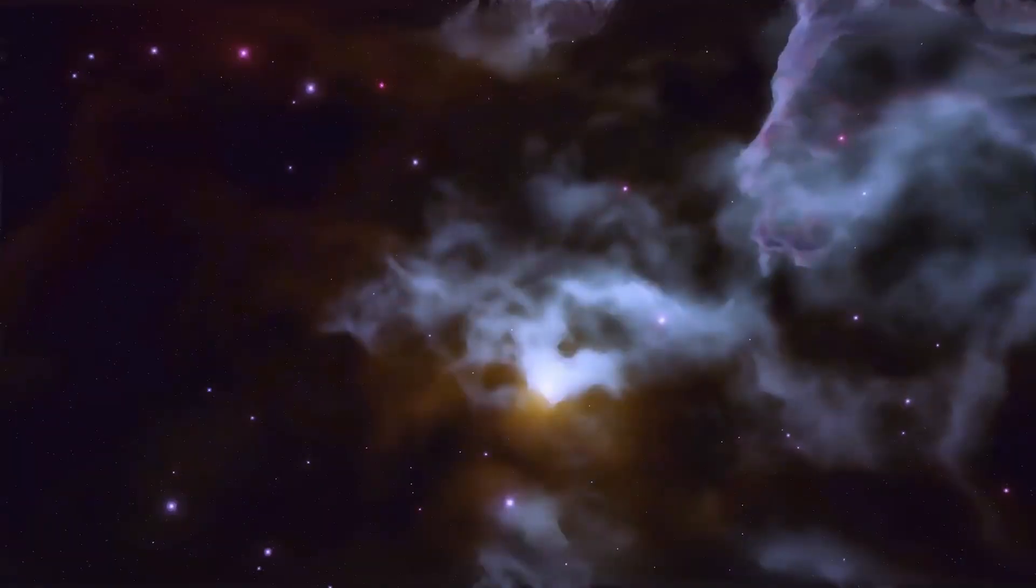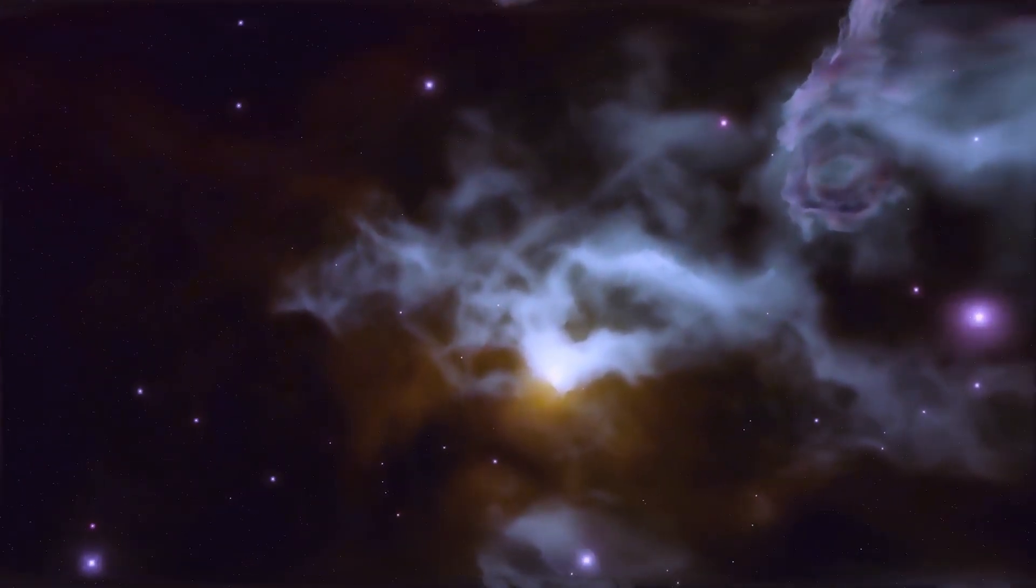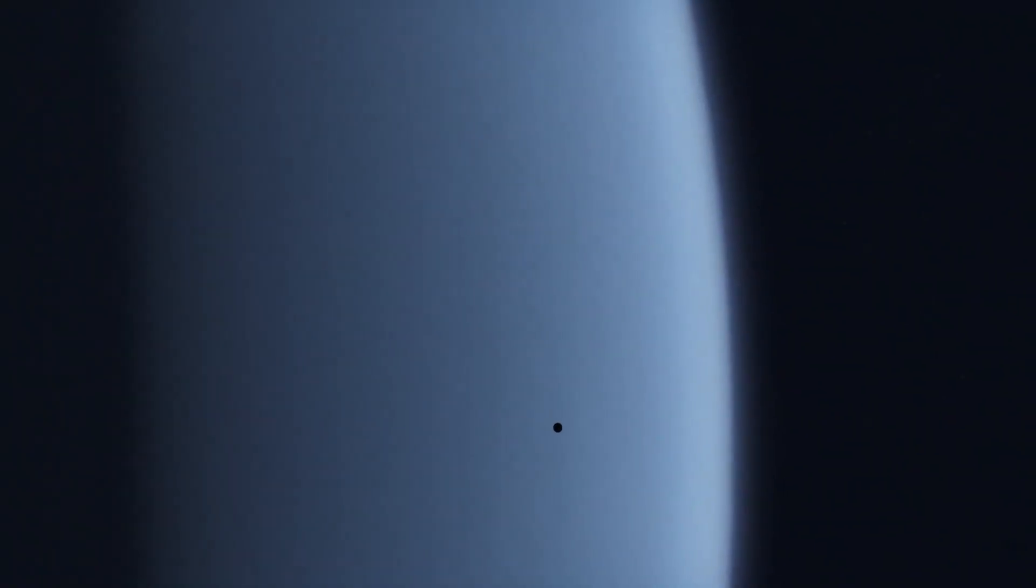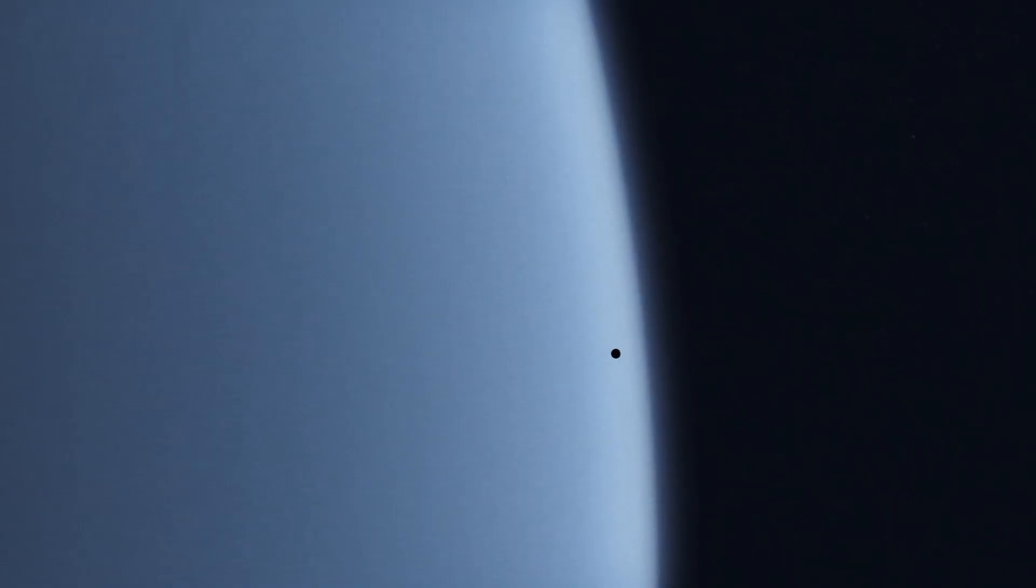By the time the object reached the edge of the asteroid belt, it had travelled nearly a million kilometers in a matter of days. It never slowed down once it reached that limit. Instead, it simply changed angle and disappeared into deeper space.